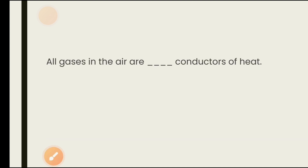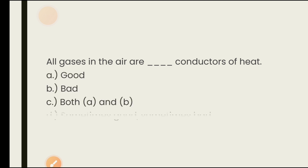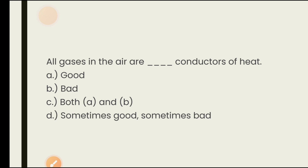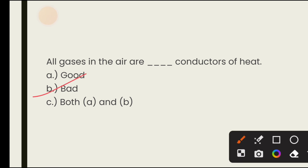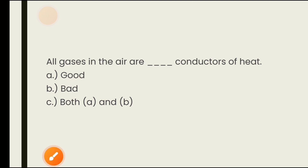Next question: all the gases in the air are — good conductor, bad conductor, both A and B, sometimes good sometimes bad. All the gases found in air — nitrogen, oxygen, and others — are bad conductors of heat. So the answer is bad conductor.